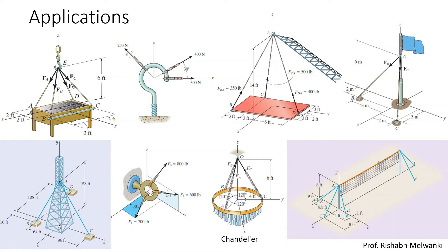Here are a few applications of space forces. First, some component is held by four ropes — this is an example of concurrent force system in space. Another example shows a hook inserted in a machine part with ropes being pulled in all three directions x, y, and z. A third example shows a boom holding a horizontal slab with three ropes and hooks — again concurrent force system in space.